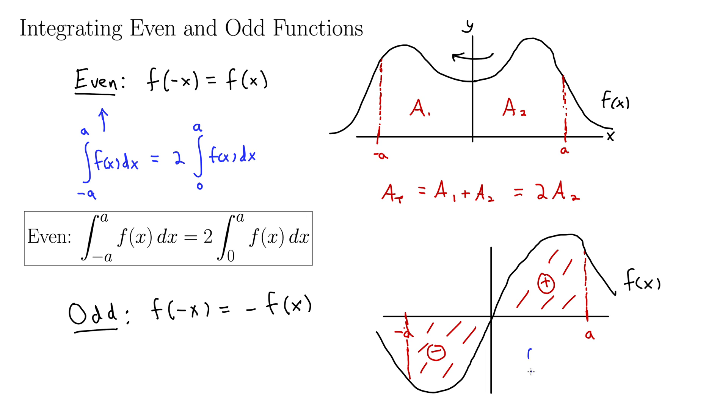Thus for an odd function, we can say that the integral from negative a up to a of f(x)dx is always going to be 0 for odd functions.